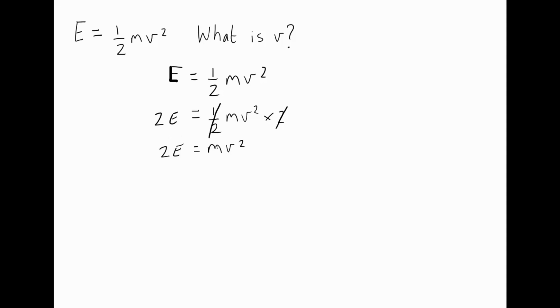Right, let's undo the M part. It's been multiplied by M, so we need to divide by M in order to get V squared by itself. Because we've divided this side by M, we must also divide this side by M. We can see that this M now cancels with this M, so we're left with 2E divided by M equals V squared.